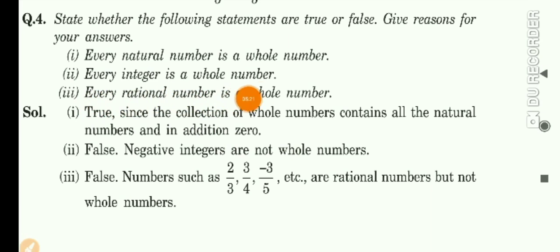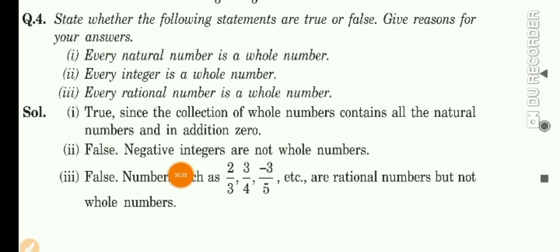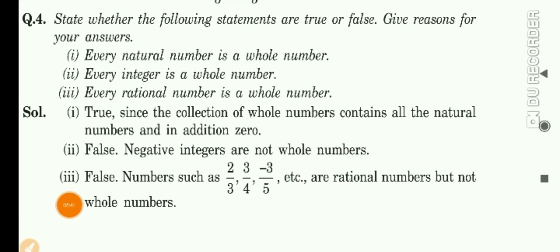The second one is: every integer is a whole number. Every integer — integers are of two types: positive and negative. So here the second one is false, because negative integers are not whole numbers. A negative number is not a whole number.